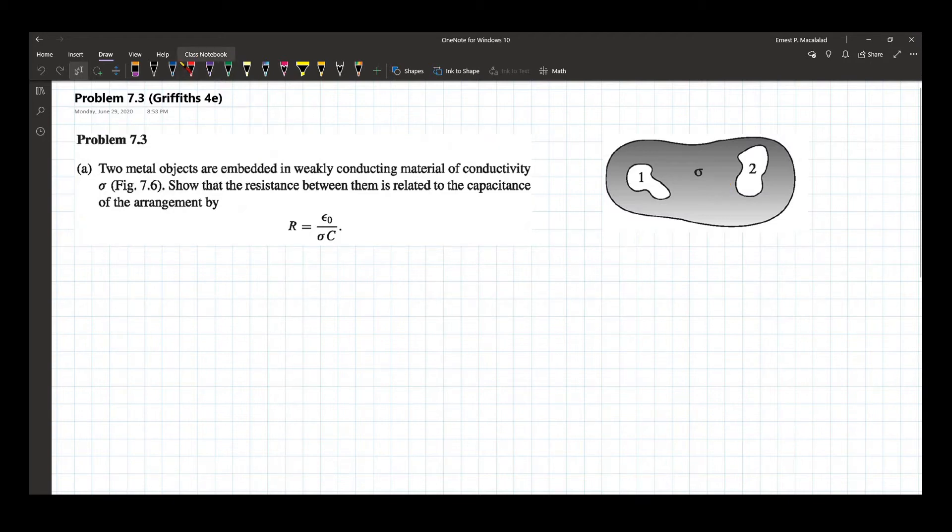Now, let's first calculate the currents between metal 1 and metal 2. So the current will now be expressed as I.